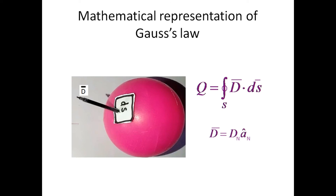Let us assume we have a point charge distribution. Around the point charge distribution, a closed Gaussian surface is considered. To find out electric field intensity and electric flux density, a small differential area ds is taken over the Gaussian surface. Then a vector D is constructed starting from the charge distribution and crossing ds. The D vector will be equal to Dn times an, where n represents the normal component.